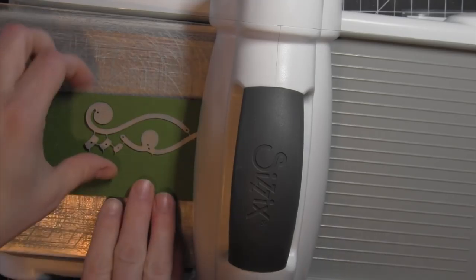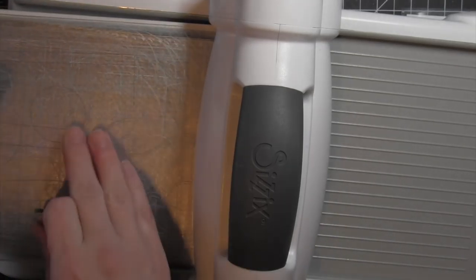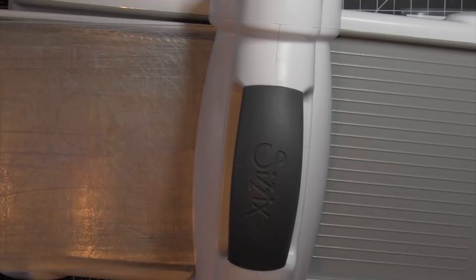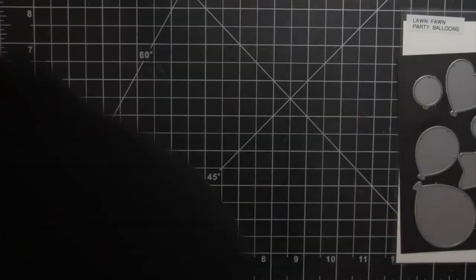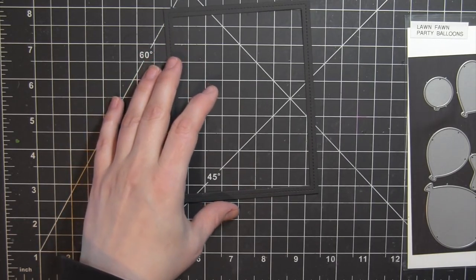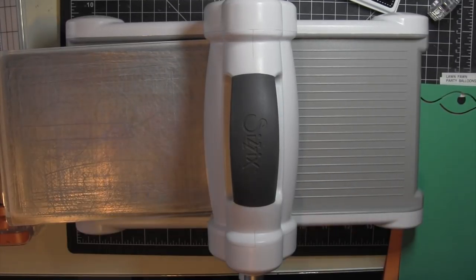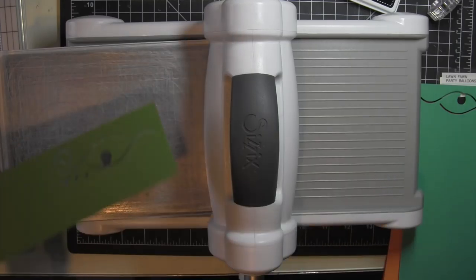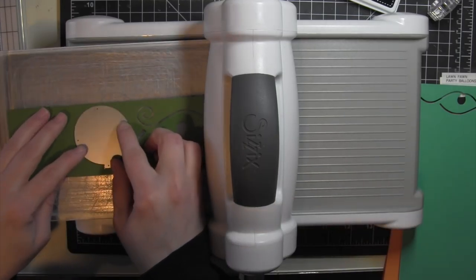I love that Lawn Fawn has released this cardstock. It's in their signature bright colors. It's just wonderful. It's a nice smooth cardstock. It stamps on beautifully, and it creates some really fun die cut shapes. It would be great for card bases. There's just tons you can do with it.